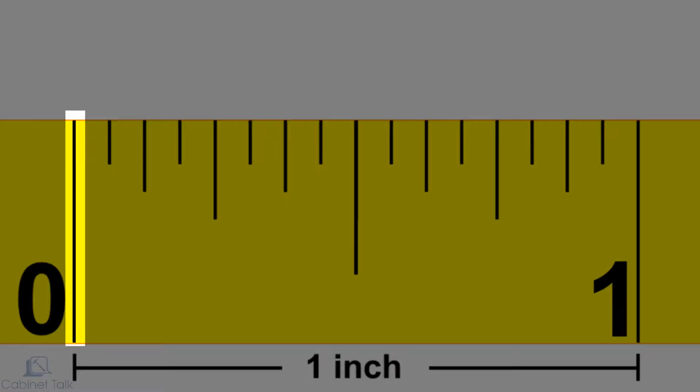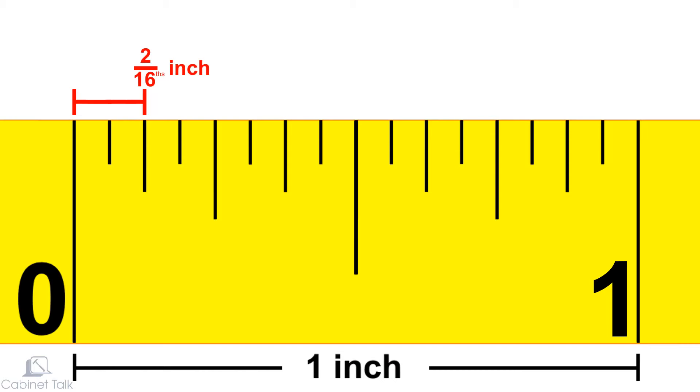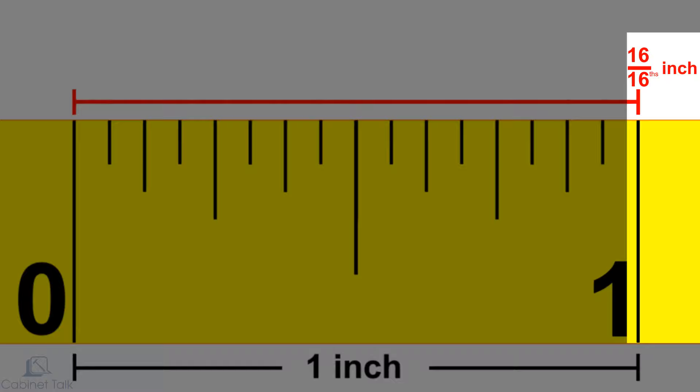The distance between the zero mark and the first line is one sixteenth of an inch. The distance between the zero mark and the second line is two sixteenths of an inch, and so on, until we reach 16 sixteenths, which is just another way of saying one inch.